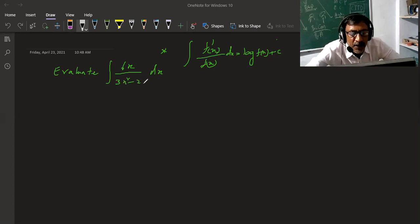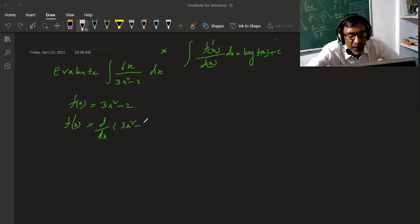So f of x is equal to 3x square minus 2. f dash x is the derivative of f of x, the derivative d by dx of 3x square minus 2.